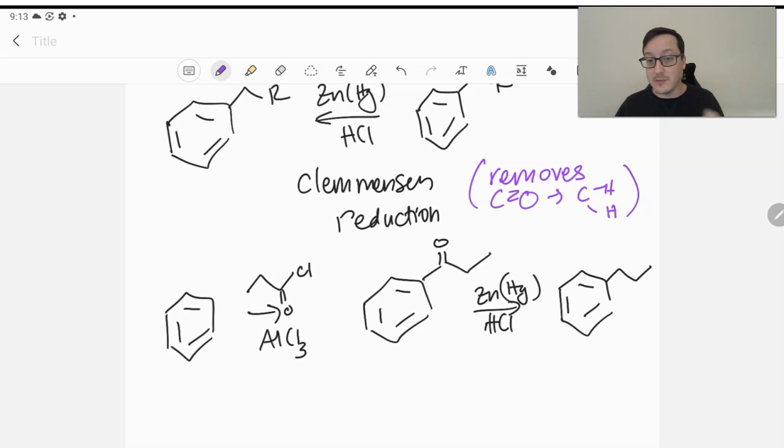And again, sometimes this is valuable, sometimes it's not. It merely depends what you want. Remember, you cannot put propyl benzene on with the Friedel-Crafts alkylation because of carbocation rearrangements. So this would be the only way to put that on, if that's what you needed.